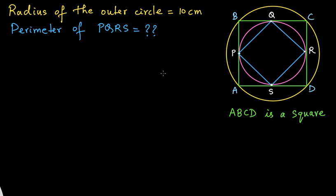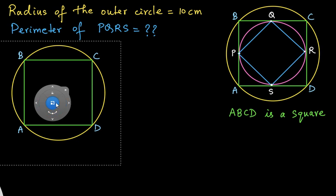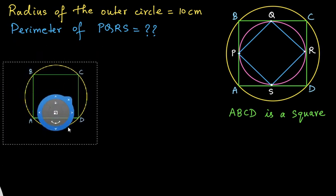Since we have so many figures in this question it might get a little confusing if we deal with them all together. So let us start with the outermost circle and the square. I have already prepared them — here we have the outer circle and the green colored square.